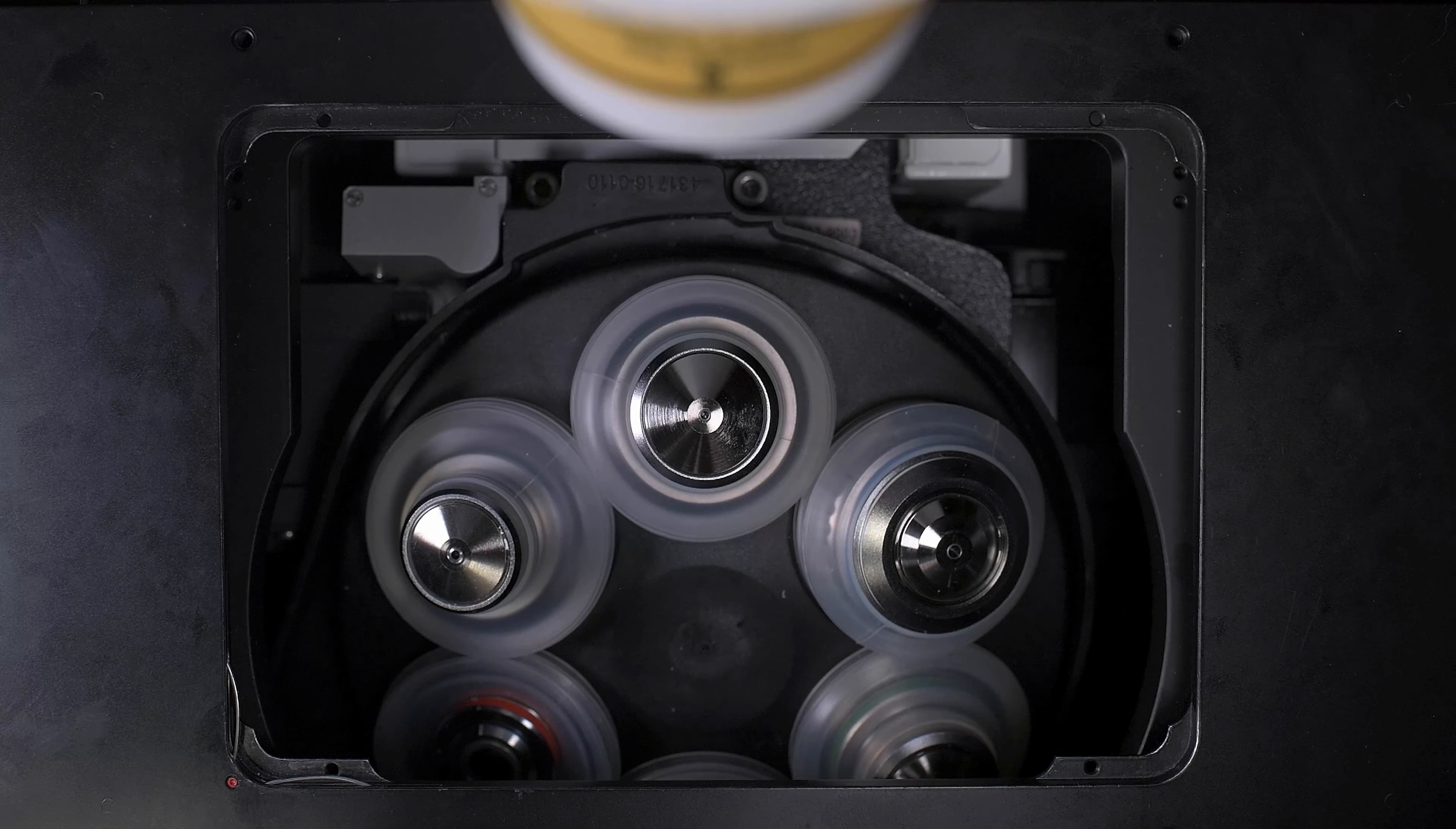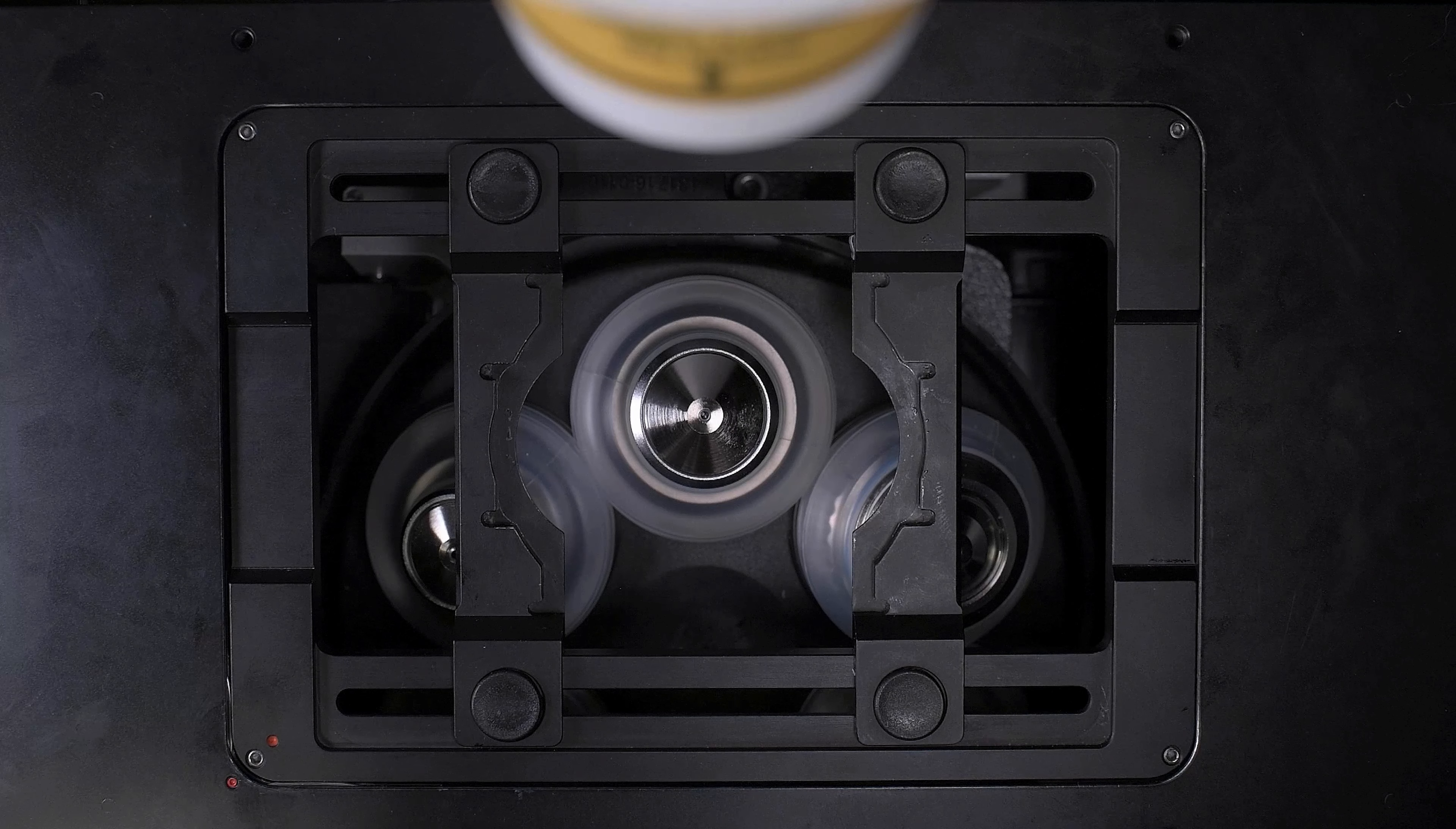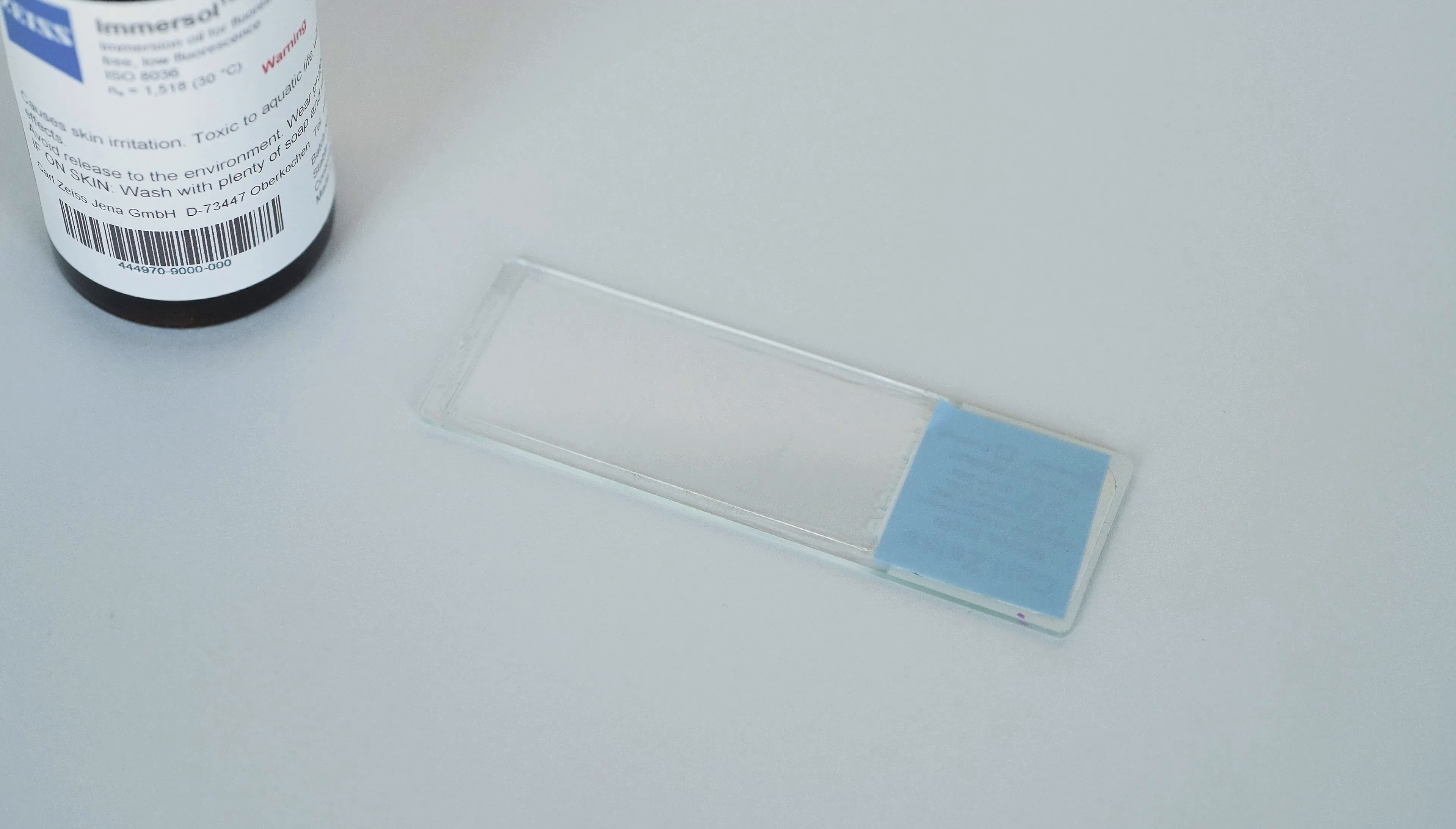To mount our specimen, choose a sample holder that can be inserted into the universal slot on the motorized stage. Mount this sample holder as discussed in our previous microscope training. Before we mount our slide into the sample holder, we will need to add a small drop of immersion oil to our cover slip. Whenever possible, we try to apply the immersion fluid to the sample rather than directly on the objective. This way we can avoid potentially scratching the lens while applying the oil.